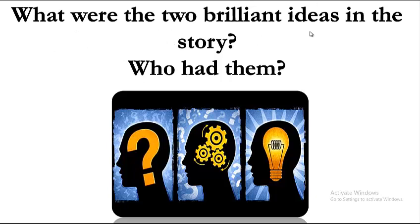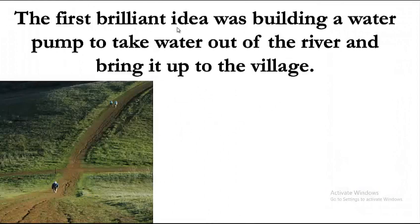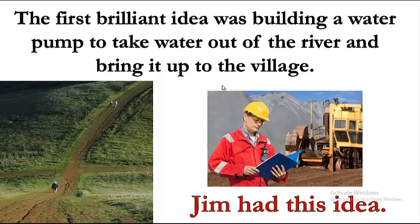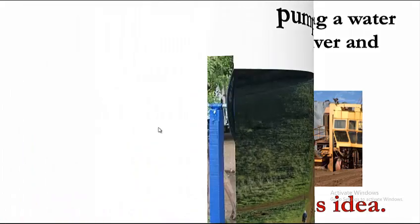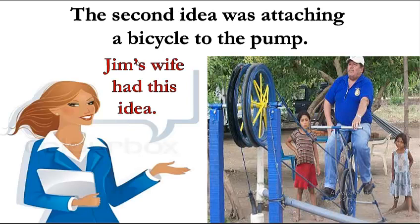There were two brilliant ideas which helped them get water easily. The first brilliant idea was building a water pump to take water out of the river and bring it up to the village — Jim had this idea. The second idea was attaching a bicycle to the pump — Jim's wife had this idea.